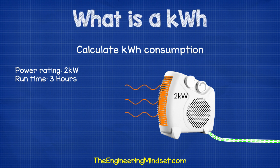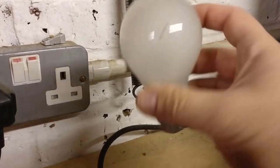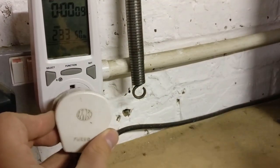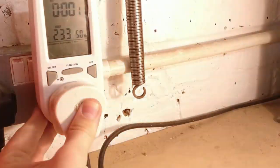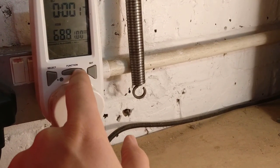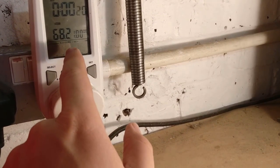To work out how much electricity will be used by the heater, we need to know how much power it will demand and how long it will be switched on for. We can see that this item is rated at 2 kilowatts. If you don't know the power rating of an item, you can buy one of these plug-in energy monitors, which will tell you the volts, the amps, the watts, and also the kilowatt hours. They're pretty cheap and very easy to use, so I'll leave a link in the description below.